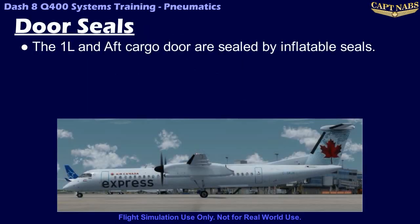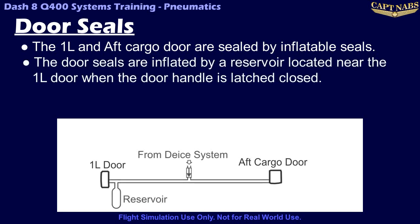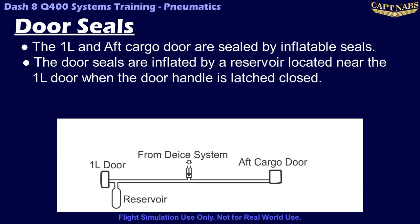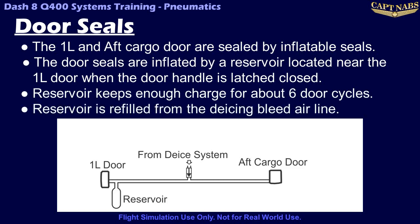The 1L and aft cargo doors on the Q400 are sealed, when closed, by inflatable seals located around the perimeter of each door. When either door is closed and latched, the seal around that door is inflated until the door is unlatched again. The air for these seals is supplied by a pressurized air reservoir located under the floorboards near the 1L door. This reservoir contains a reserve of pressure that allows for multiple door cycles while the engines are shut down. The reservoir is refilled by air pressure in the de-icing lines. As a result, this reservoir can only be refilled when an engine is running. The APU cannot fill the de-icing lines and thus cannot refill the reservoir.